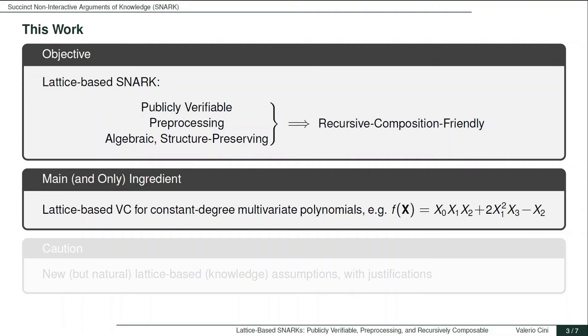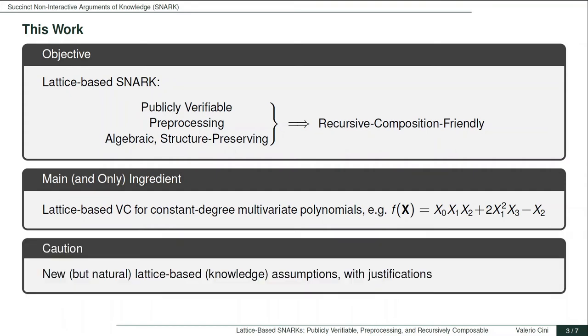In this way, we reduce the task of constructing a SNARK to that of constructing a VC scheme. I will now sketch how to construct such a lattice-based vector commitment. This requires the introduction of a new but natural class of lattice-based knowledge and non-knowledge assumptions.